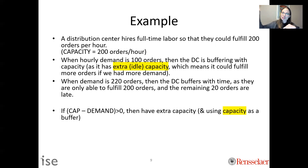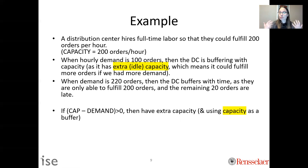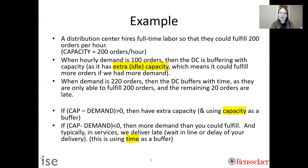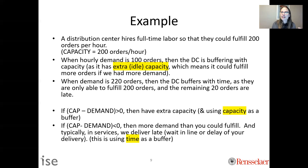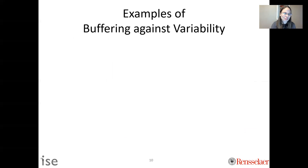There's usually some combination of these things. On average, you set some capacity level. Sometimes demand is higher than that, sometimes lower. You use capacity as a buffer when capacity exceeds demand — idle resources. You use time as a buffer when demand exceeds capacity — customers wait or deliveries are delayed. Your job as an industrial engineer or supply chain manager is to understand the best way to buffer against variability.